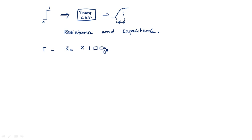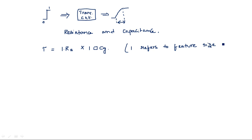Suppose if you are taking one transistor, it has an internal on-resistance or sheet resistance of 1 RS into 1 square CG. Here '1' refers to the feature size, where feature size is L equal to W, so the Z value is 1. The ratio is also 1, so the time delay — tau — is equal to RS into CG, or tau equals RS into 1 square CG.